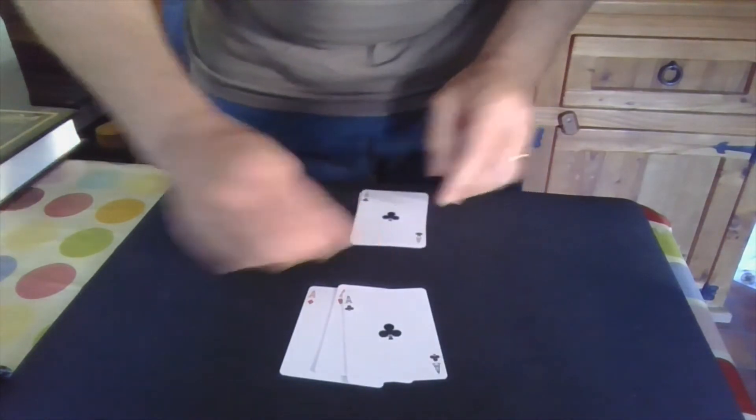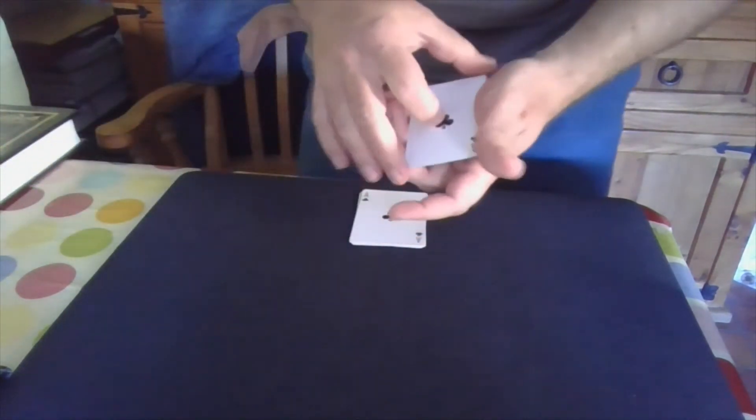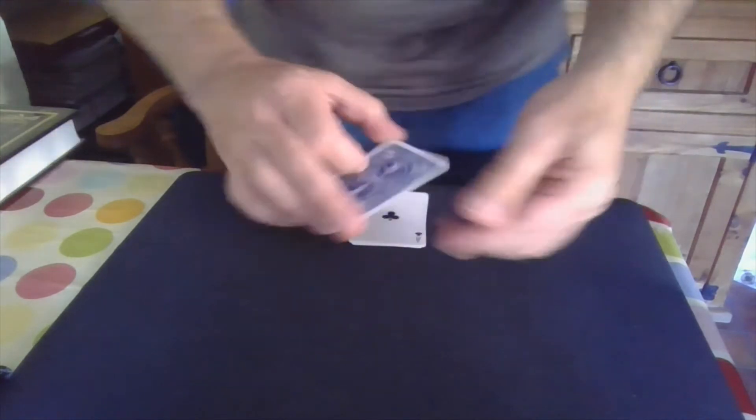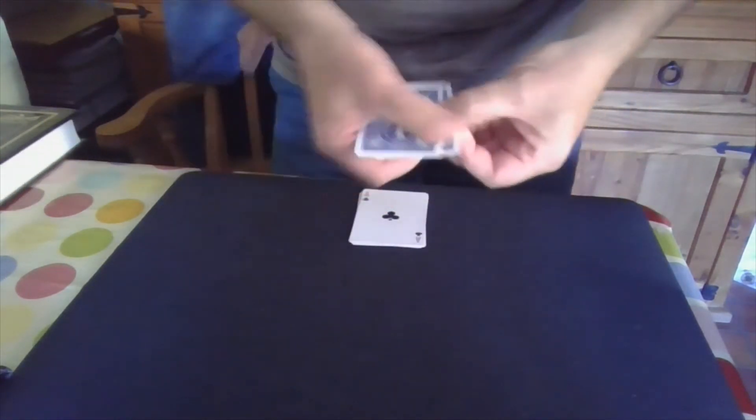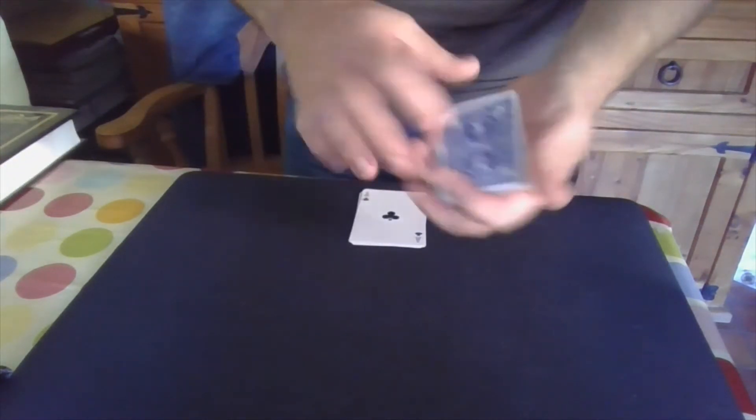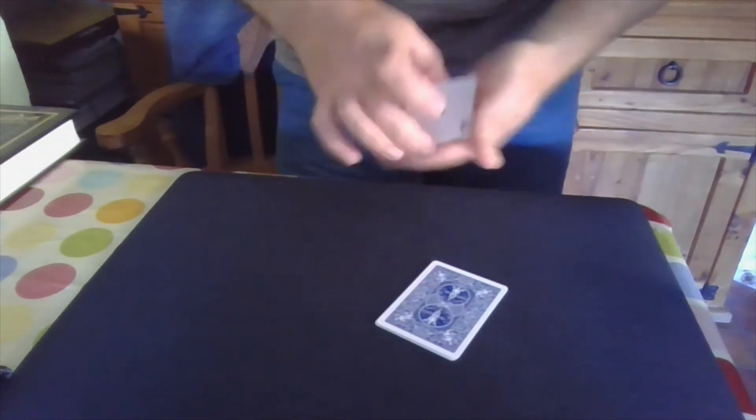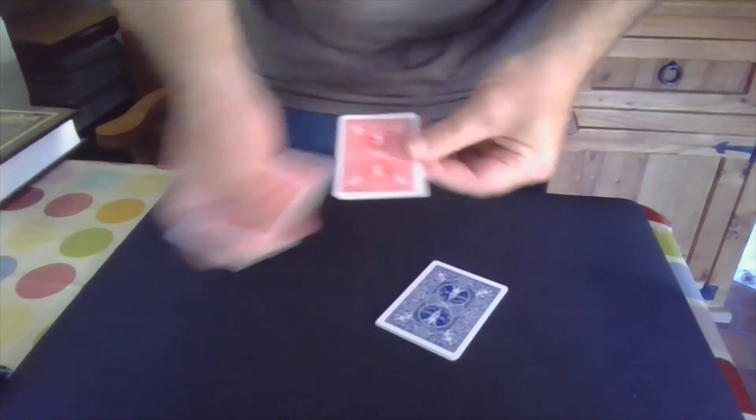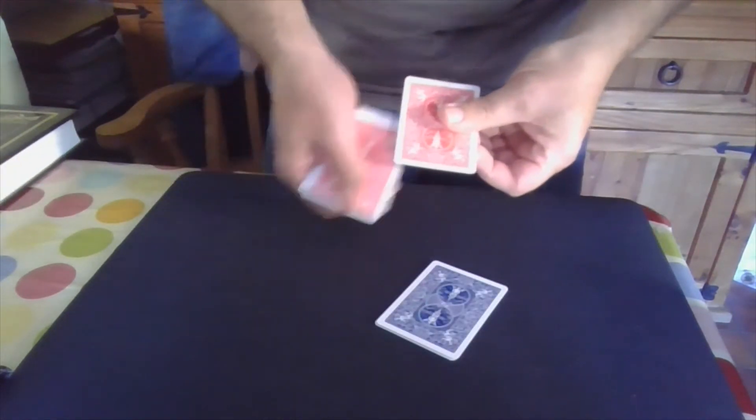However, just simply by squaring, picking up one packet, and then tap it there against the other one. Now we have one two three four blue cards here, here the four red cards.